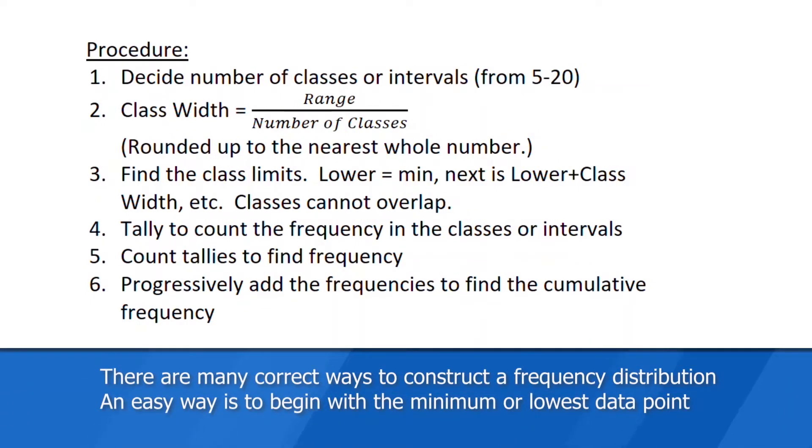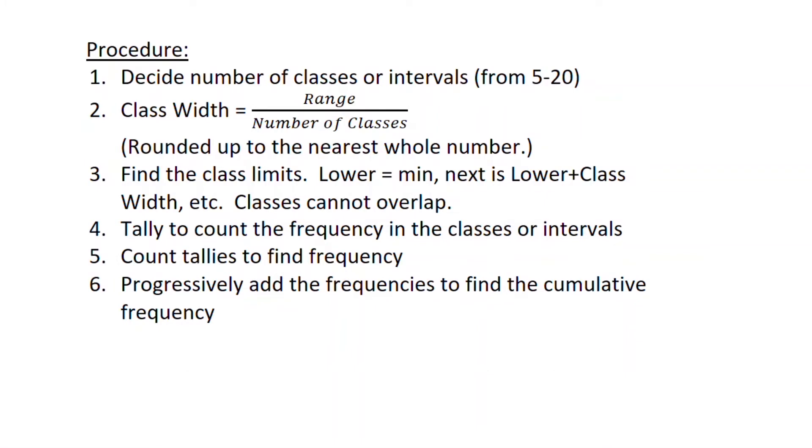So once you've collected your data, typically from a sample, you want to first create a frequency distribution table. And from that, we can create a graph. So the procedure is to decide on the number of classes or intervals. The rule of thumb there is to keep it between 5 and 20. If you have too many, it's not helpful. And once you've decided on the number of classes or intervals you want, then you need to calculate your class width. That's the range. The range is simply the highest value in your data. Subtract the lowest, divide by the number of classes, and then round up to the nearest whole number or the nearest decimal place.